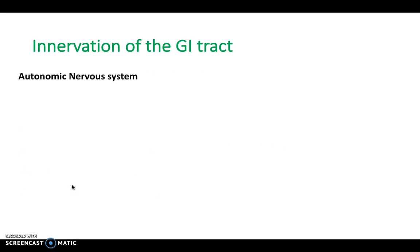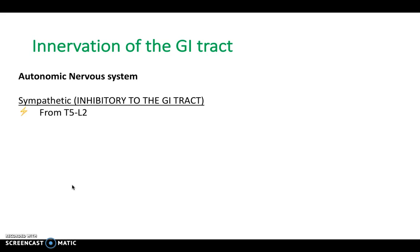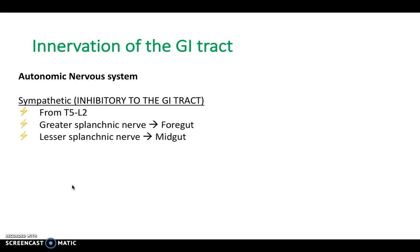In terms of innervation of the GI tract by the autonomic nervous system, the sympathetic branch is inhibitory to the GI tract. It comes from T5 — thoracic vertebra T5 — to L2, lumbar 2. It is made up of the greater splanchnic nerve, which supplies the foregut; the lesser splanchnic nerve, which supplies the midgut; and the lumbar splanchnic nerves, which supply the hindgut.